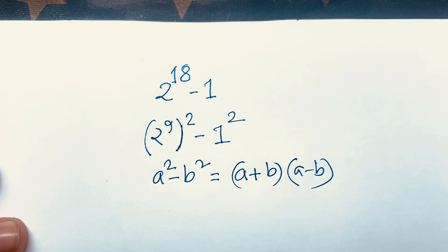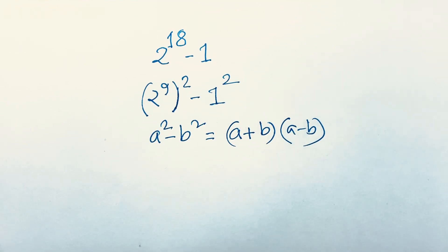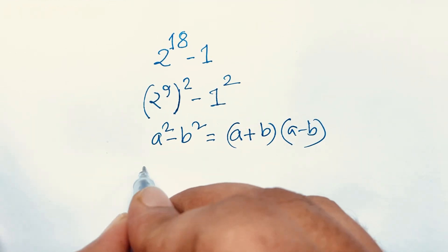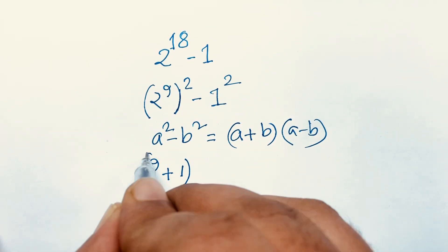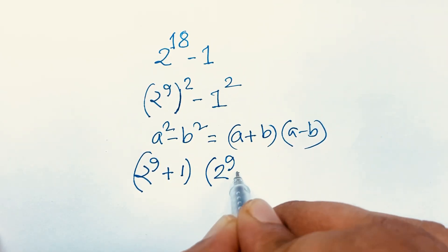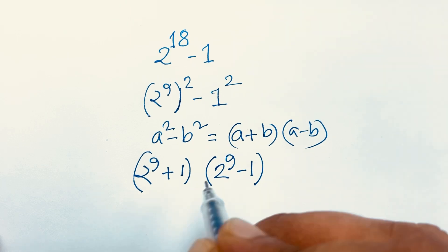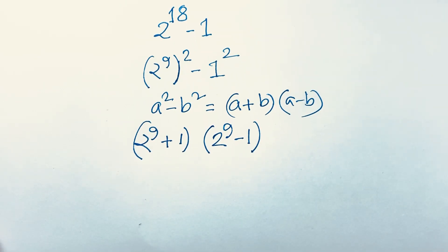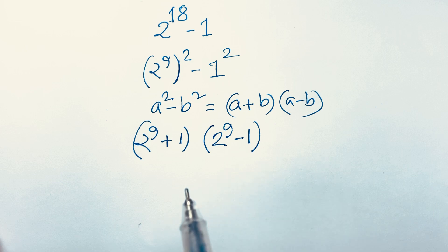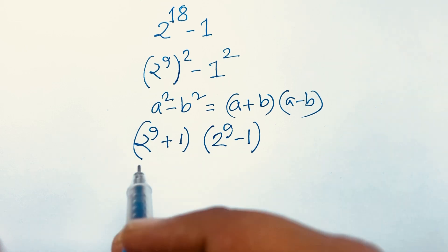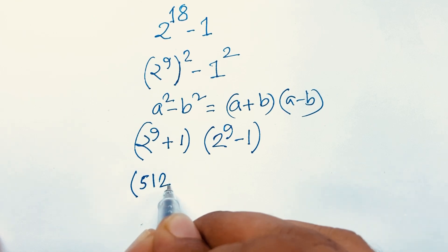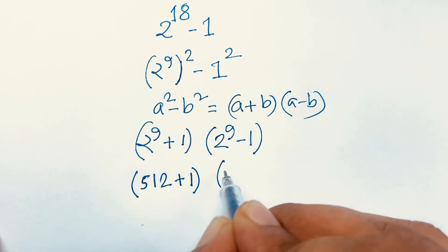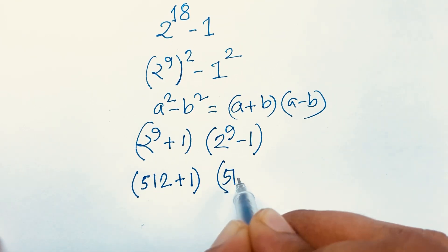We know that a squared minus b squared equals (a + b)(a − b). Applying this rule, we get (2^9 + 1)(2^9 − 1). Now, 2 to the power 9 equals 512, and 2 to the power 10 equals 1024, so 2^9 is 512.